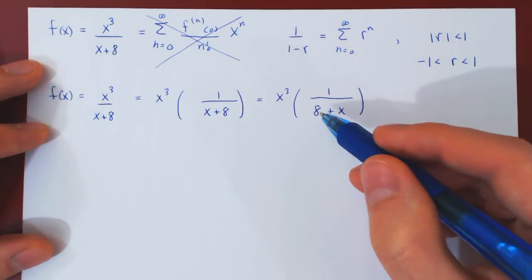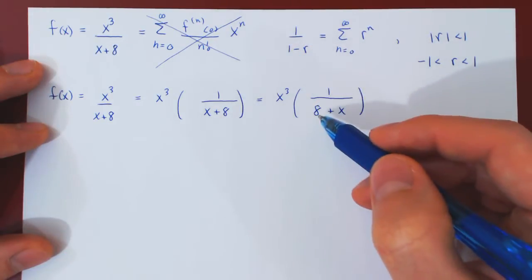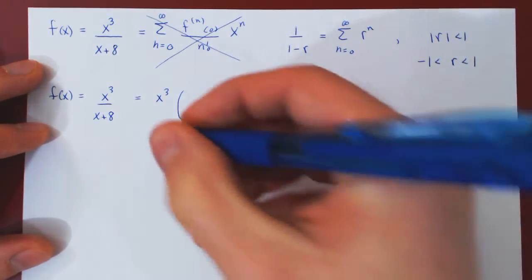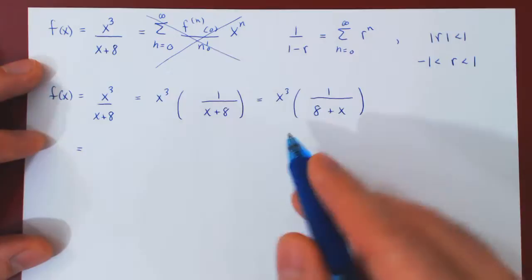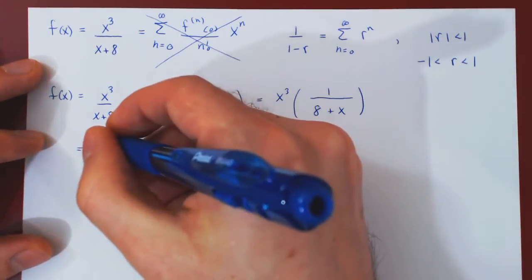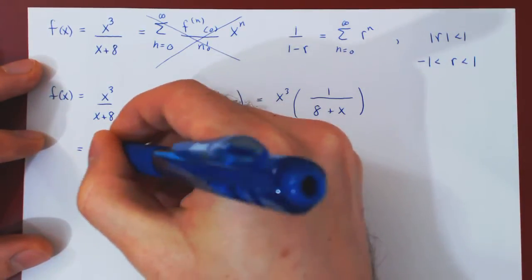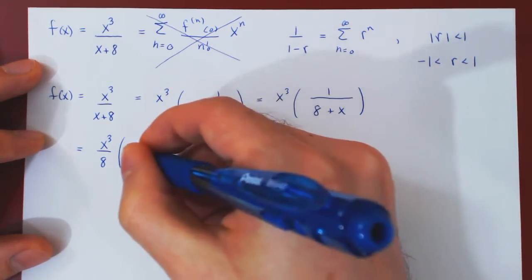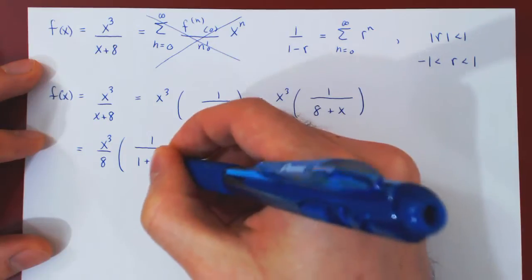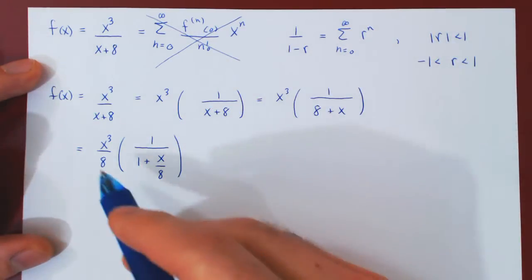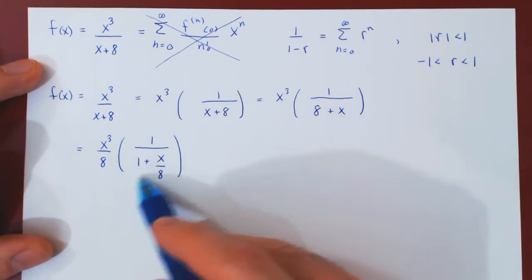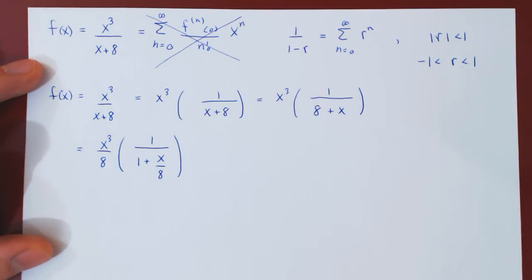Now we're getting closer. The problem is the constant here must be 1. Well, to turn 8 into 1, factor 8 from the denominator, which will give you x cubed over 8, times 1 over 1, plus x over 8. You can, of course, check by multiplying it through, so 8 plus 8 over 8x, the 8's cancel, and you're left with x.